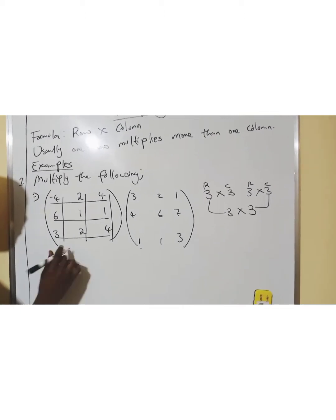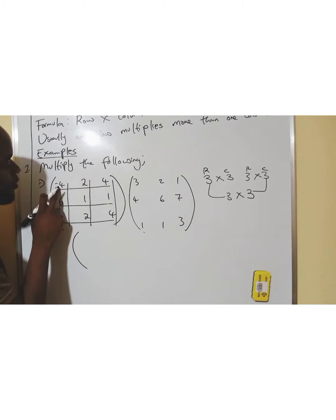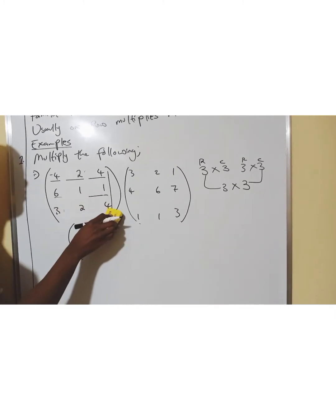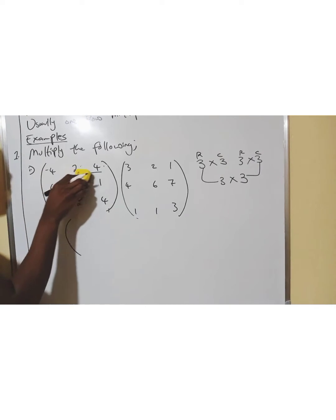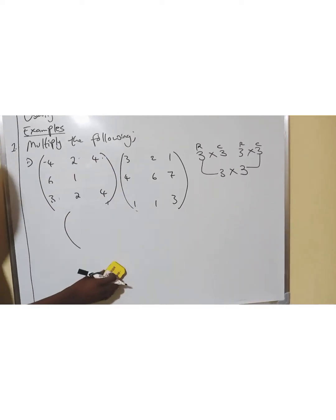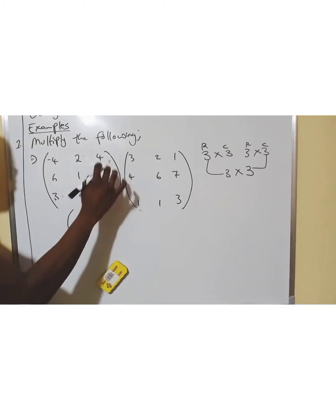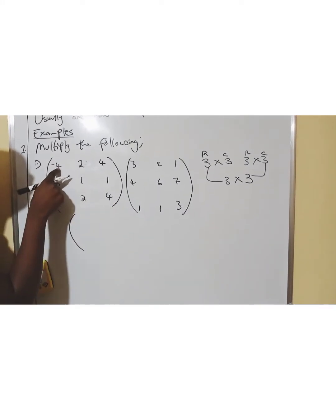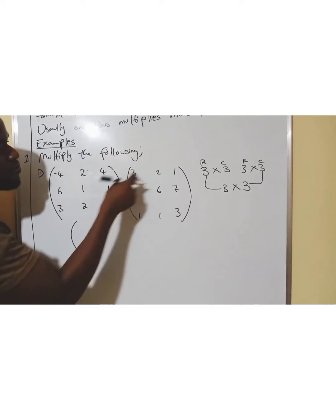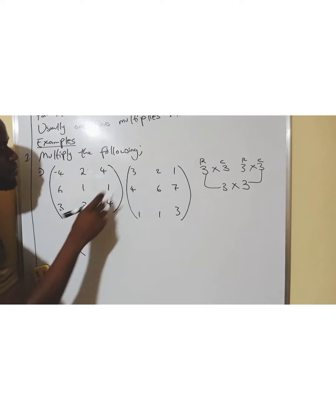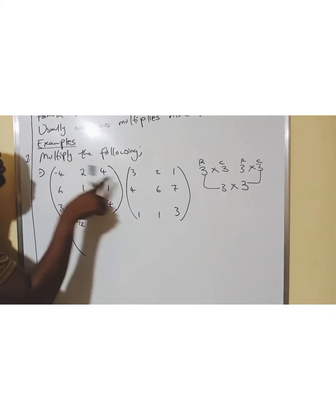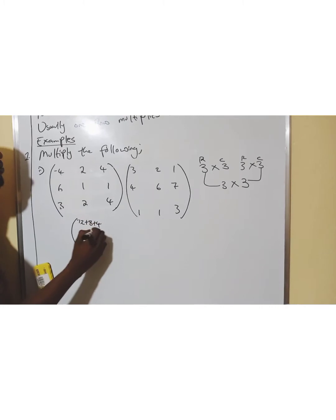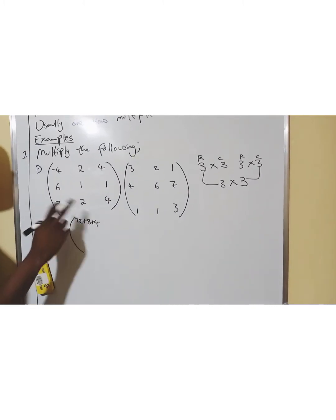Let's multiply now. So, this negative 4 — let me just erase these lines so that it becomes clear. I hope you have gotten what I was saying about the rows and the columns. So, this negative 4 is multiplying — I've said usually one row multiplies more than one column. So, this row is multiplying this column. Negative 4 times 3 is negative 12. 2 times 4 is plus 8. Then 4 times 1 is plus 4. Row, column.